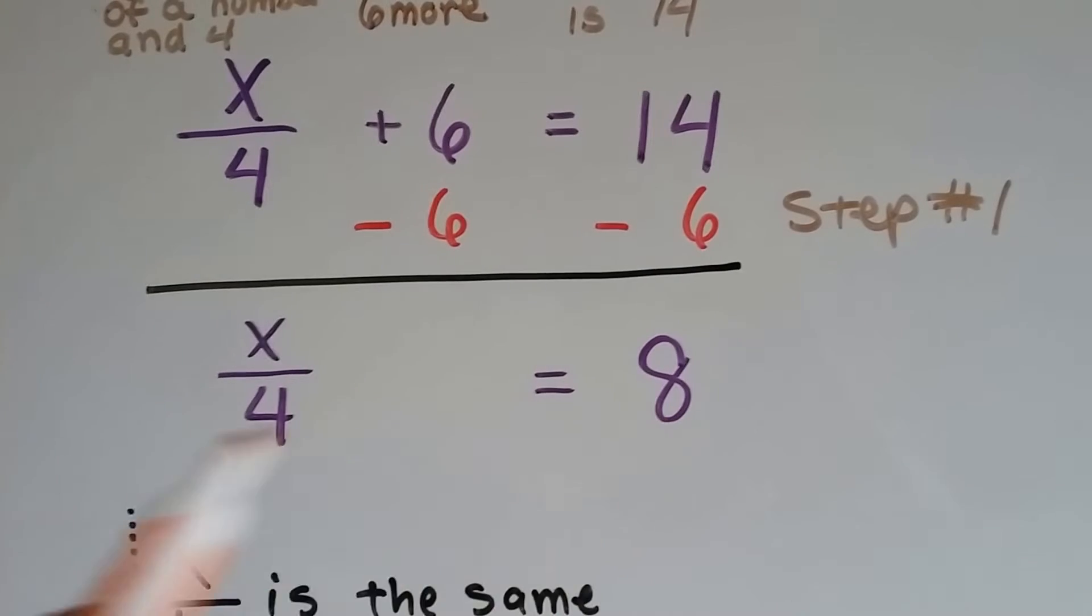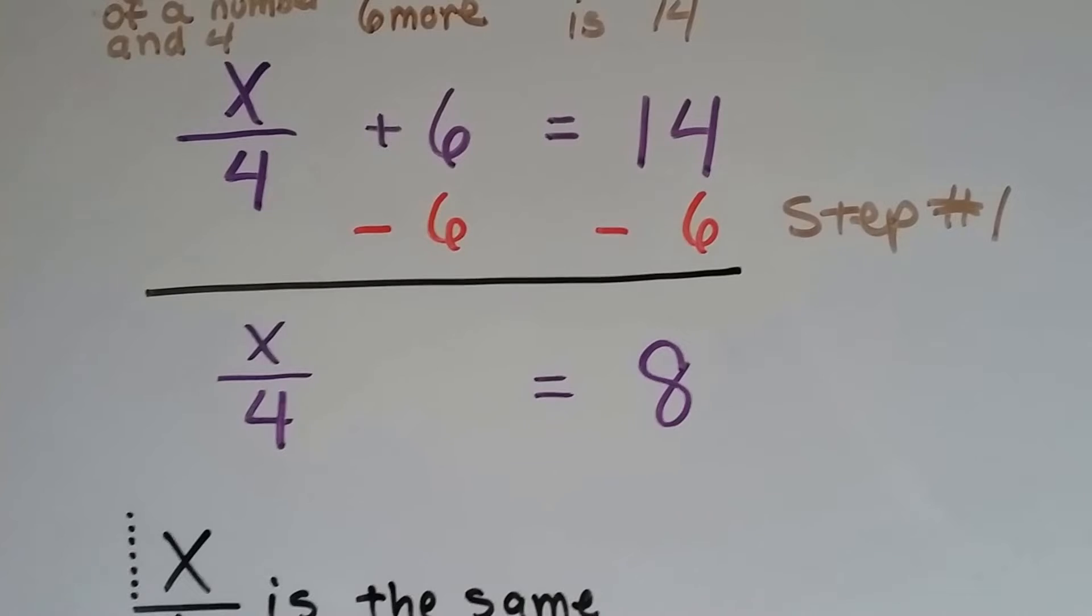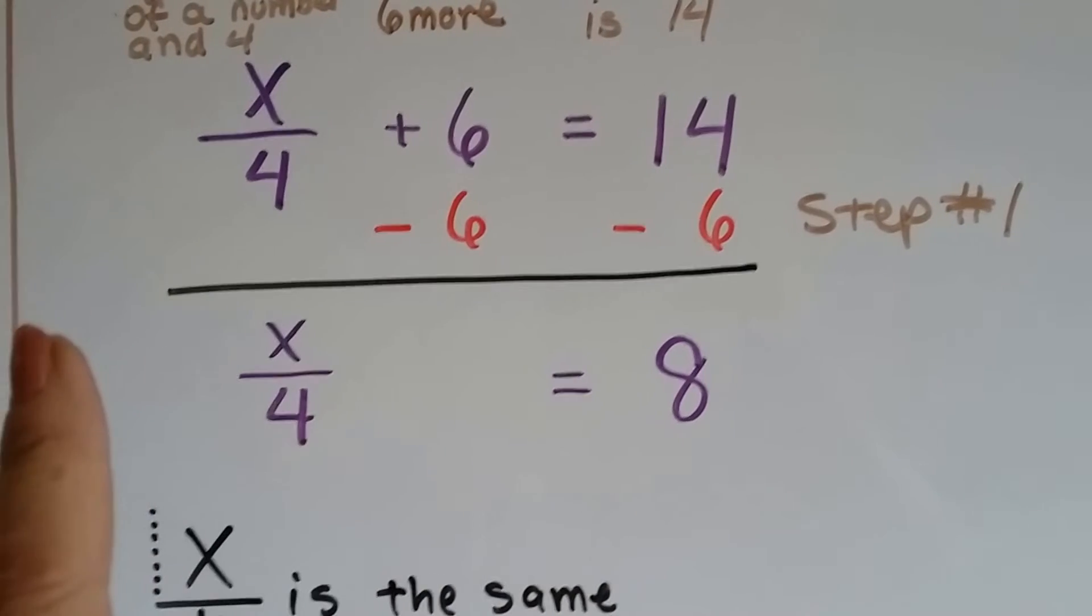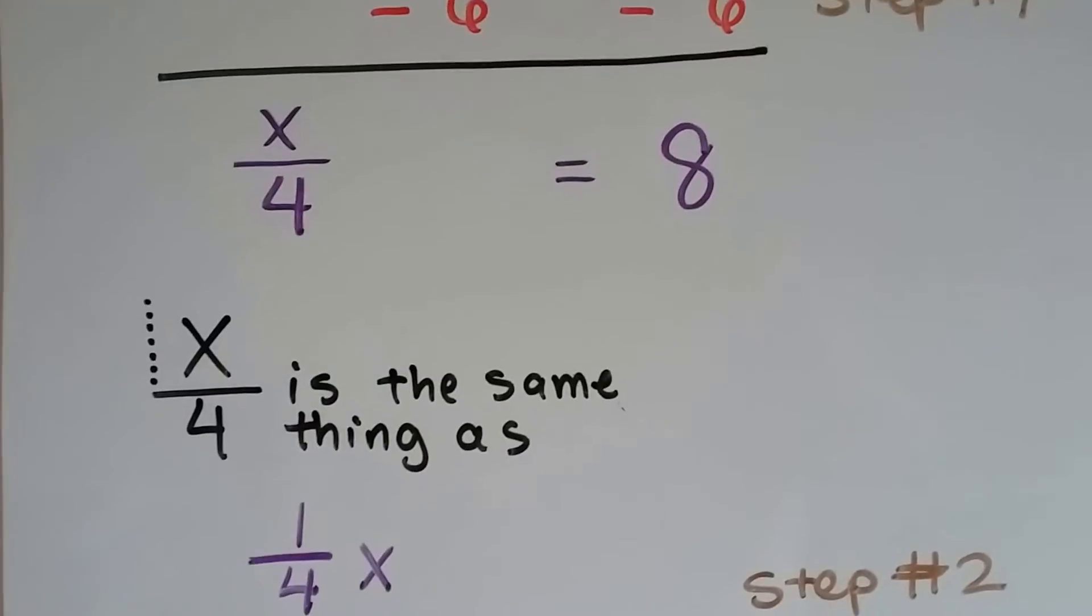Now, a lot of you can just say we multiply 4 times 8 and get 32 and we know that x is 32. But in the world of algebra, we need to solve this the correct way to get our brains thinking in the algebra way.